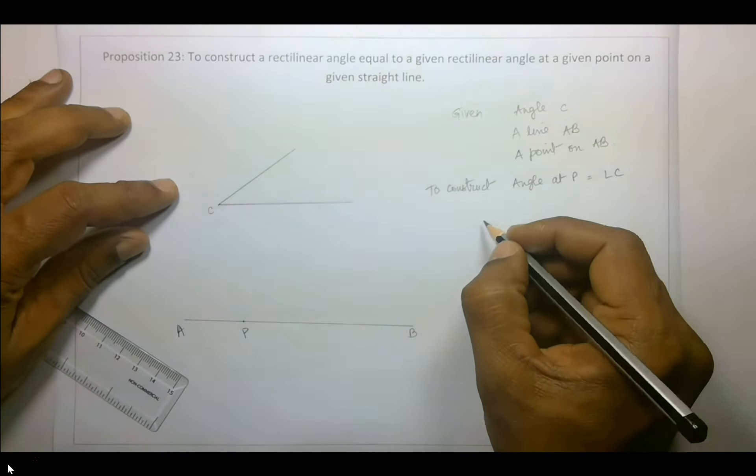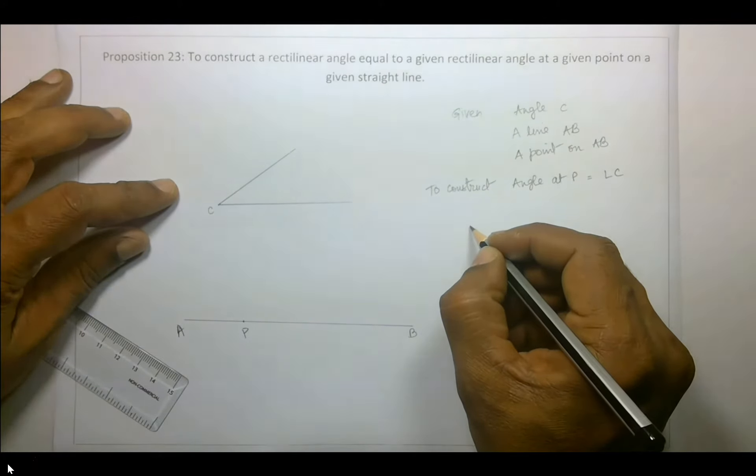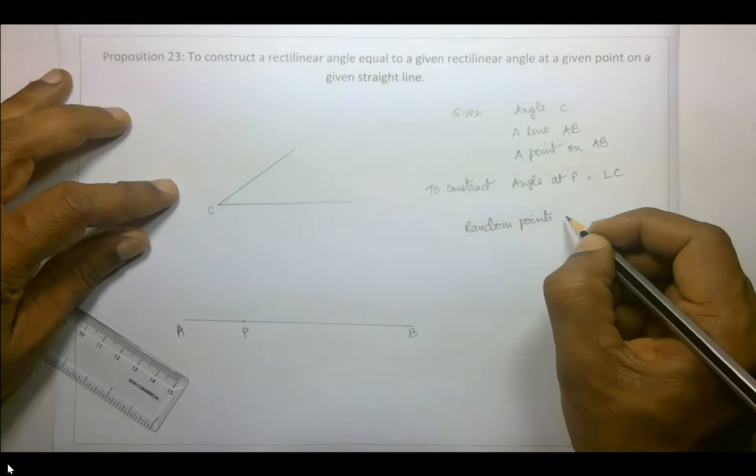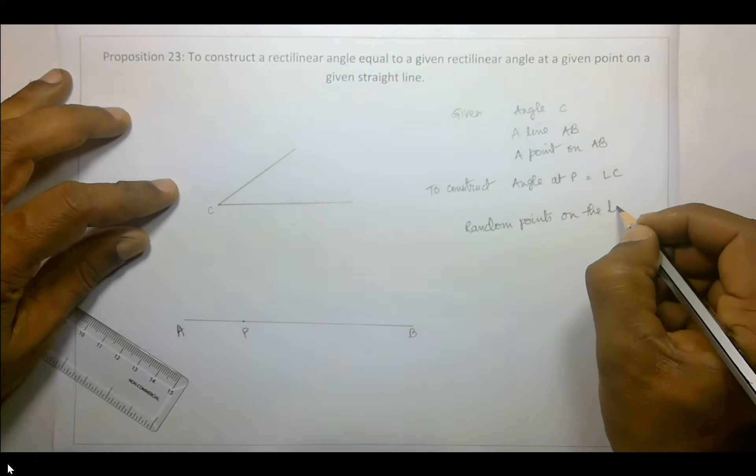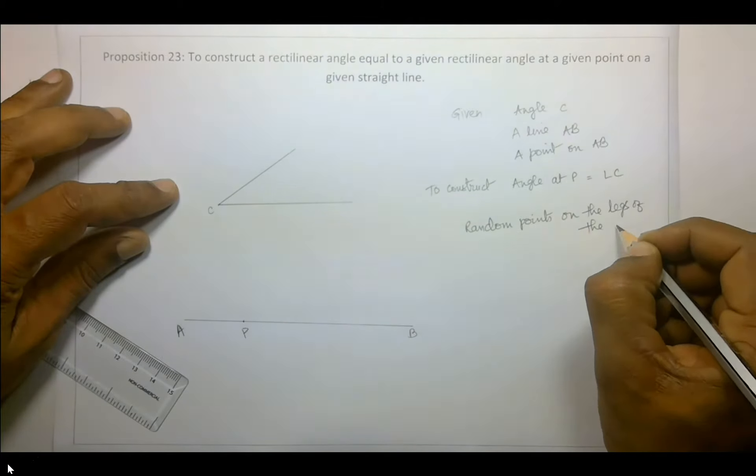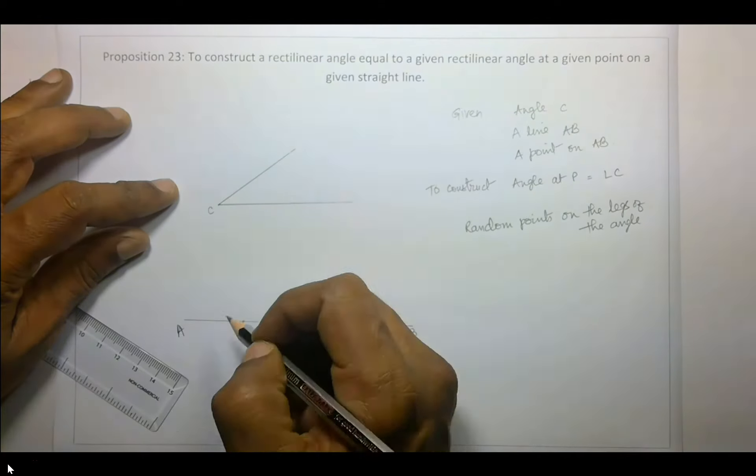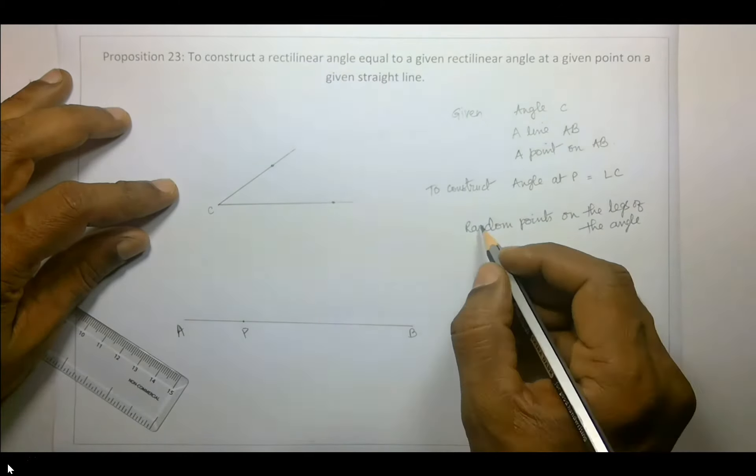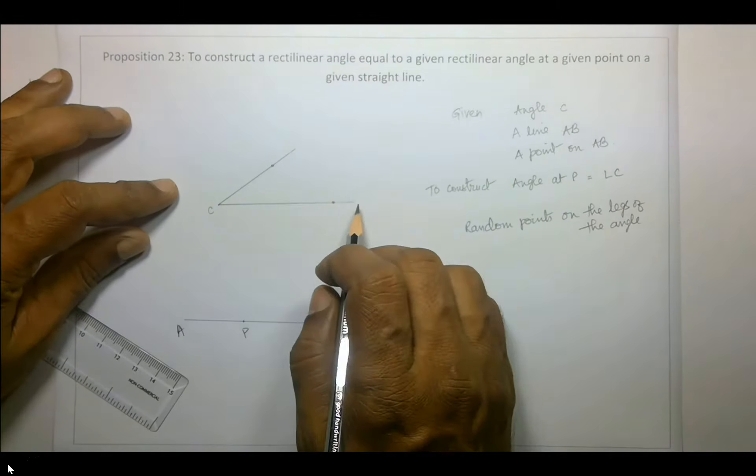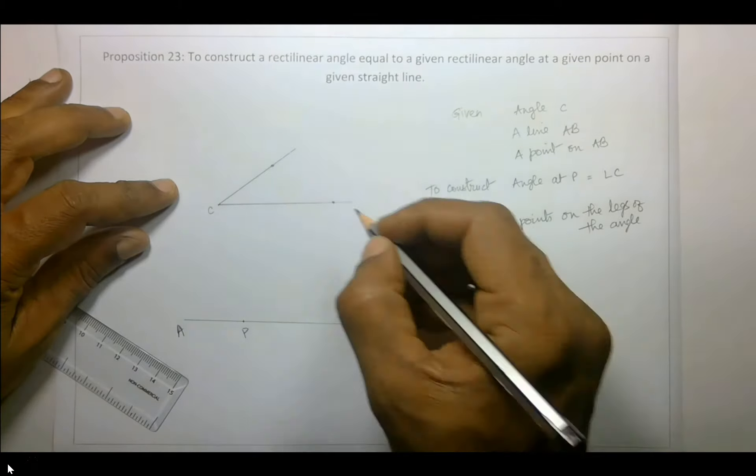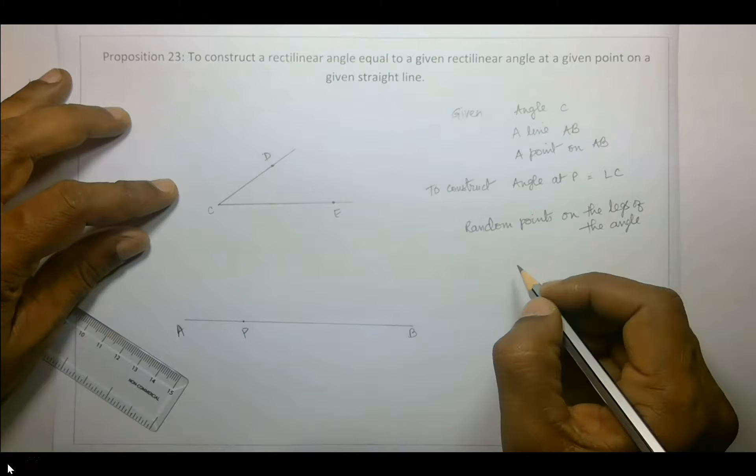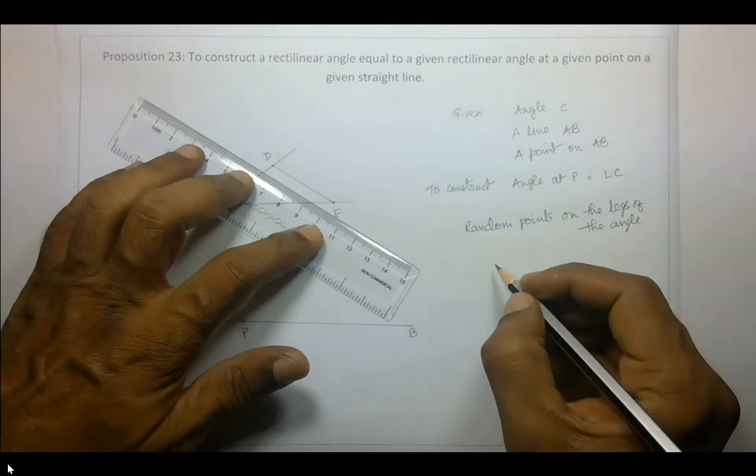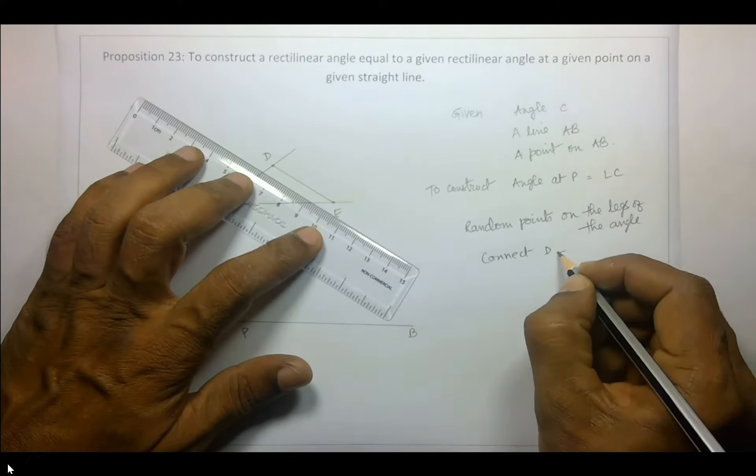The steps involved are you basically pick up random points on the legs of the angle, that is this and this. So let's say I pick up a point here and a point here. These are random points. You can pick up anywhere on this line and anywhere on this line. Now let's say this is D and this is E. Now connect these two points, connect D and E.